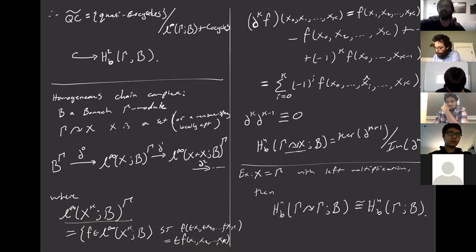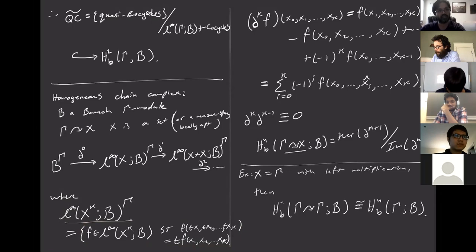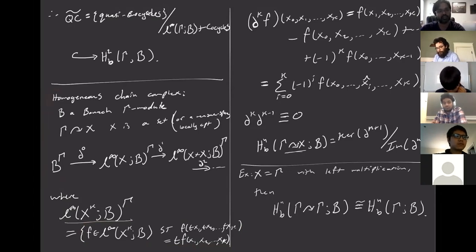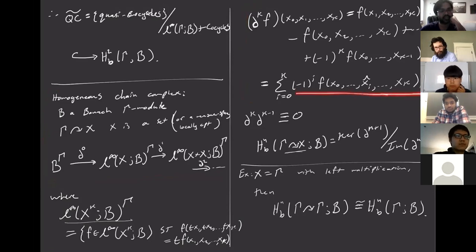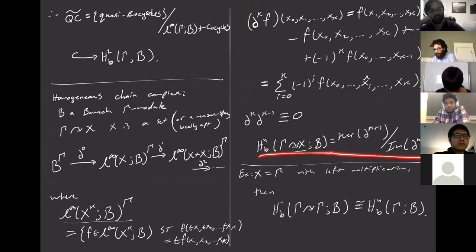We introduced this notion of bounded cocycles and bounded cohomology. Here is the definition for the homogeneous situation: you consider this chain complex, and here's your co-boundary map where you take alternating sums and forget one entry. The bounded cohomology is exactly the kernel of one map quotient by the image of the other.